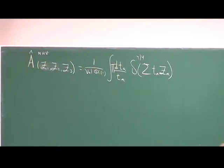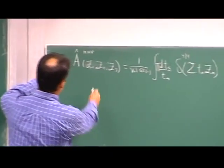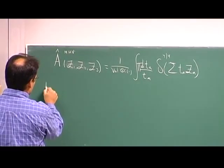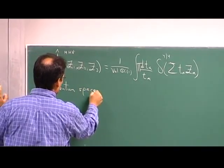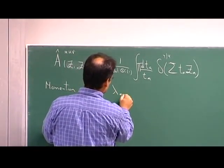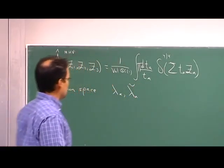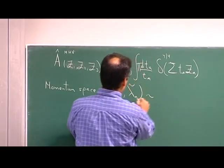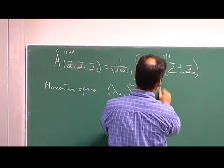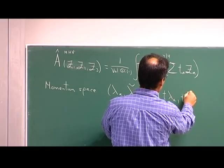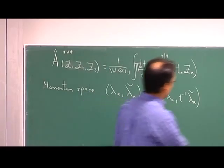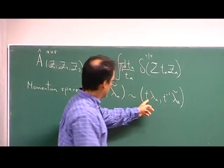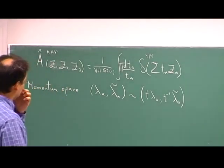Now let's note two things. The first one: recall that in momentum space, if you have a null vector or a null particle, we have lambdas and lambda-tildes, but they define the same momentum as any of these pairs. So from the momentum point of view, we have to mod out by this rescaling.